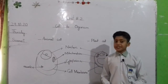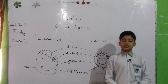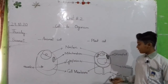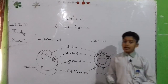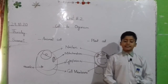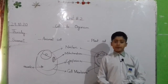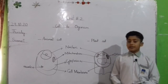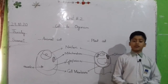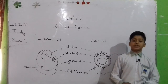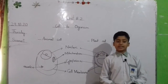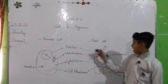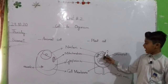Cytoplasm. It is a jelly-like structure present in both animal cell and plant cell. All chemical reactions occur in cytoplasm. Nucleus. It is the center controlling and information center of the cell. It is present in both animal cell and plant cell.